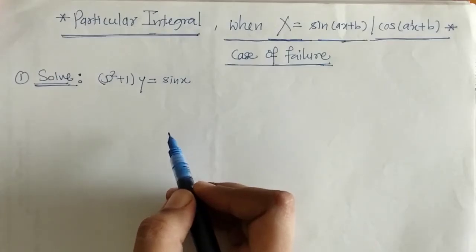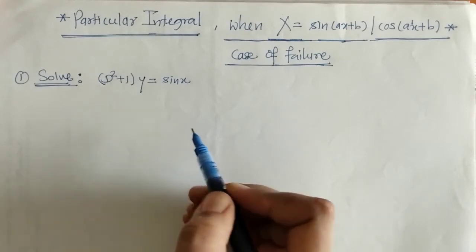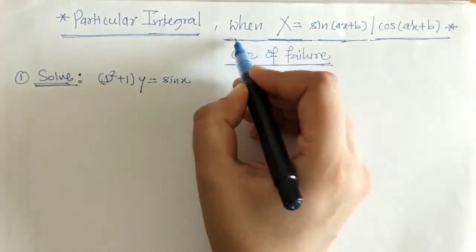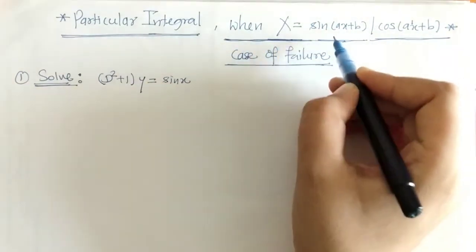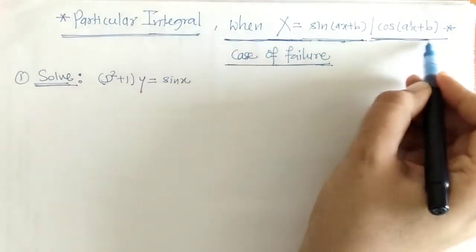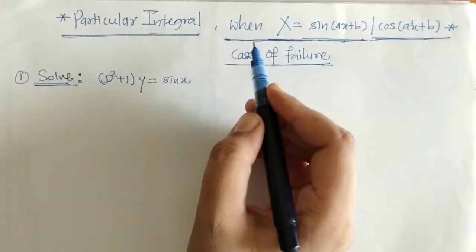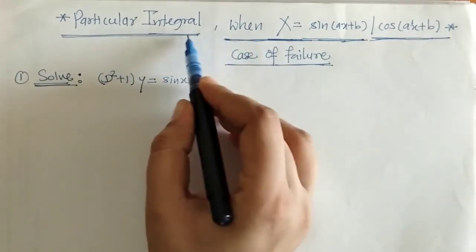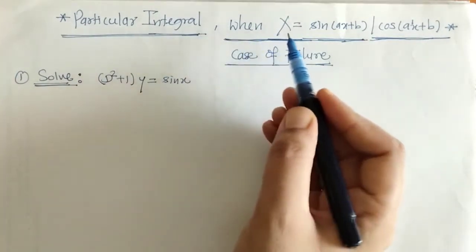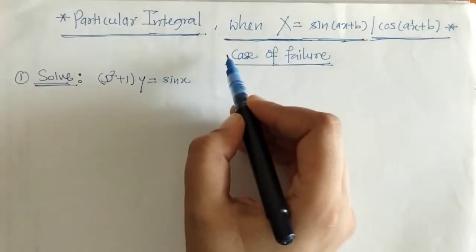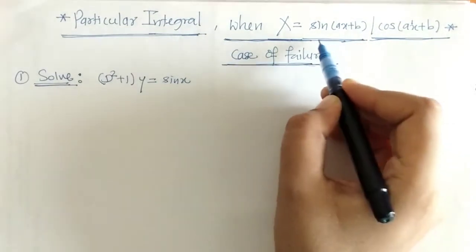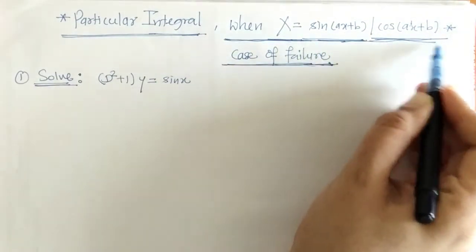Hello everyone, welcome to Unlock Maths. Today we are going to solve some differential equations when we have x equals to sine or cos. We have already discussed the case of PI in earlier lectures. Here we are going to focus on the case of failure when we have this type of function.